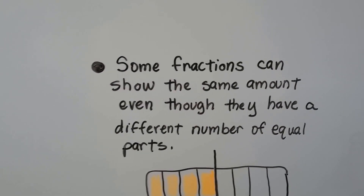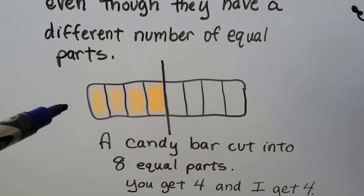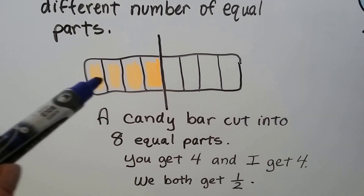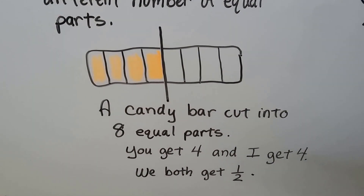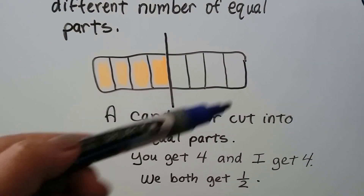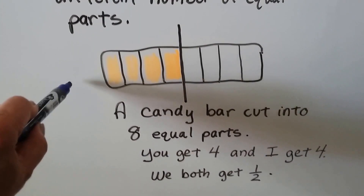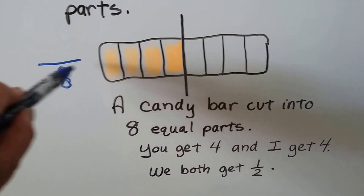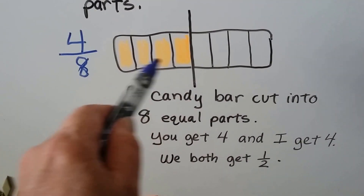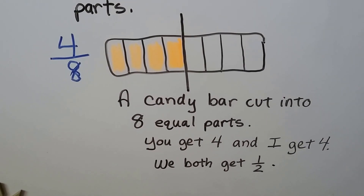Some fractions can show the same amount even though they have different numbers of equal parts. If we have a candy bar and we cut it into eight equal parts — one, two, three, four, five, six, seven, eight — you get four pieces and I get four pieces. We're both getting half the candy bar. It's cut in half right here. So there's eight equal parts and four are shaded — four-eighths of the candy bar is shaded. And if that's how much you got of it, you'd get half. Four-eighths is equivalent — it's equal to one-half.